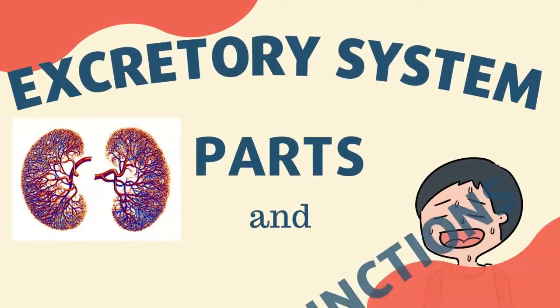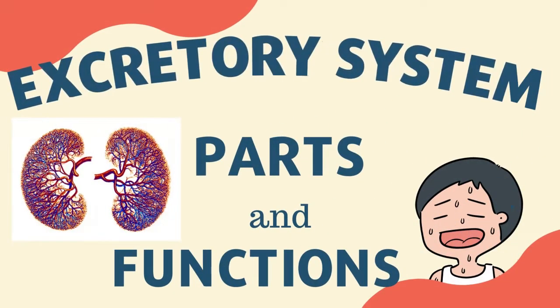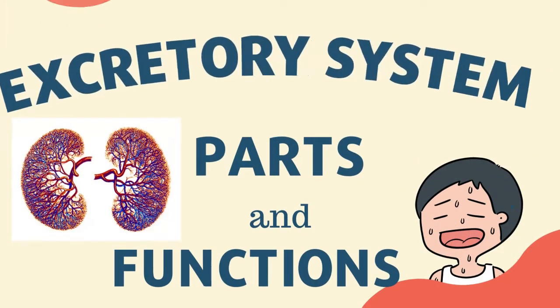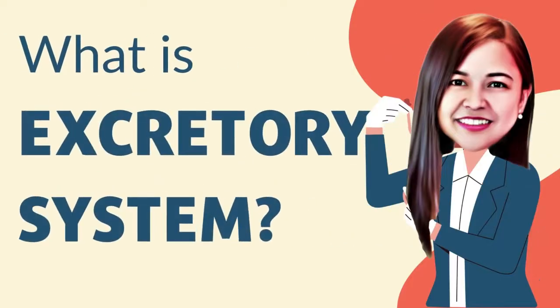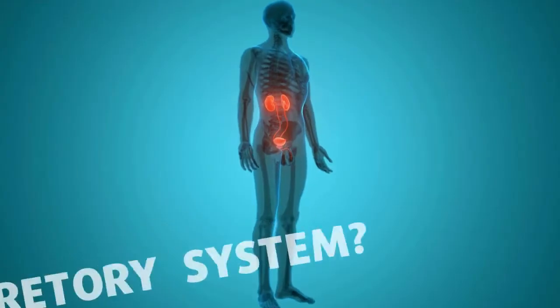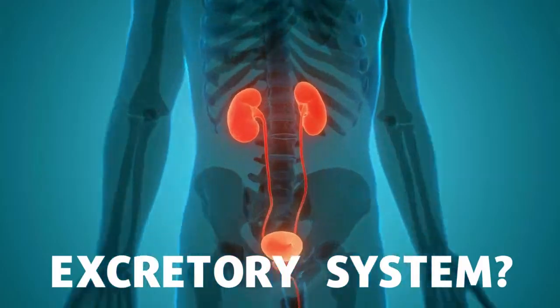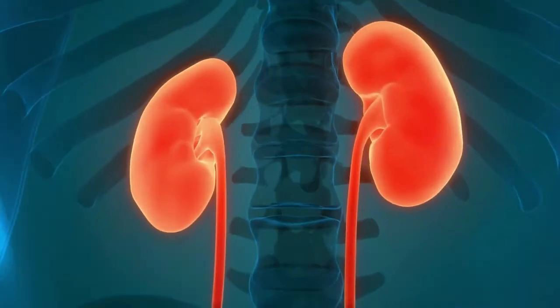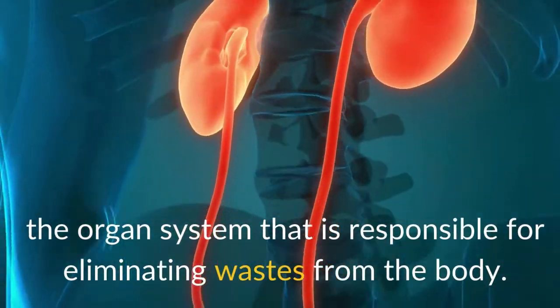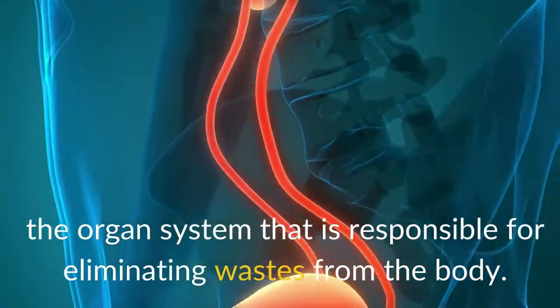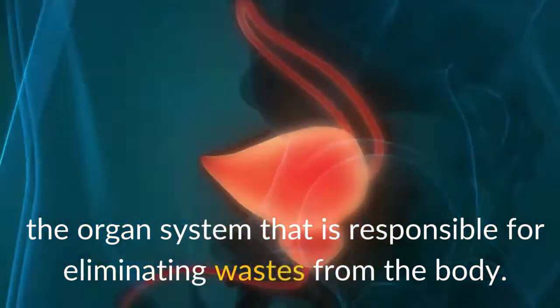Before that, let us have the definition of excretory system. What is the excretory system? This is the organ system that is responsible for eliminating wastes from the body.